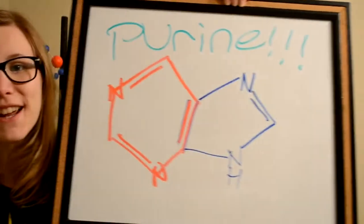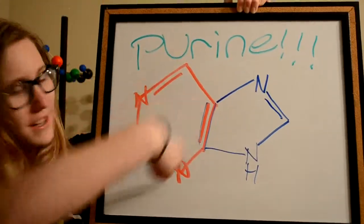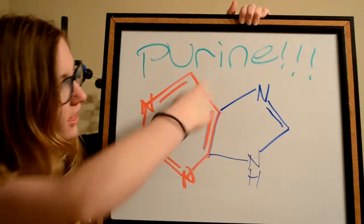But here's the crazy part about purines. They are a pyrimidine ring fused to an imidazole ring. Oh my god! This is what a purine looks like. Pyrimidine part is in red and the imidazole is in blue.